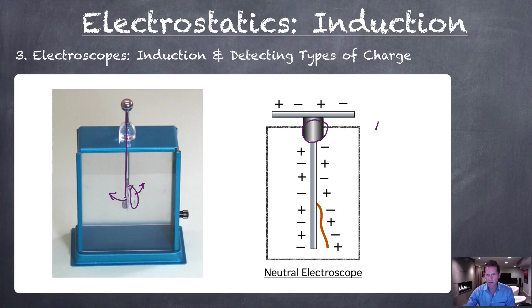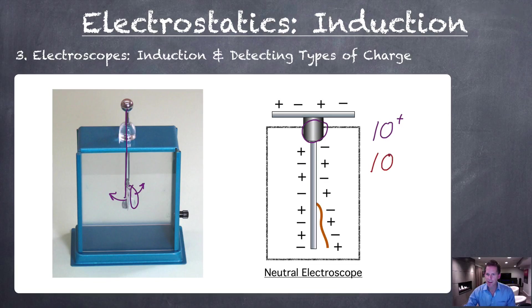If we count the positive and negative charges in our diagram, we have ten positives and ten negatives. So this is a neutral electroscope.